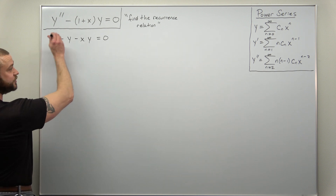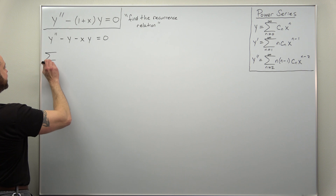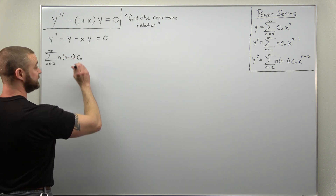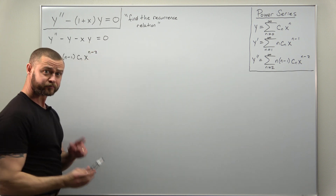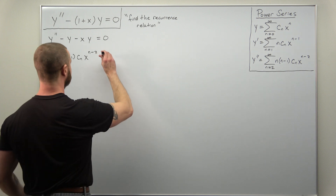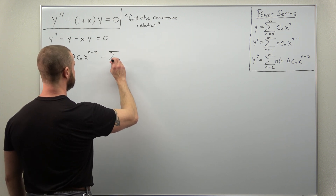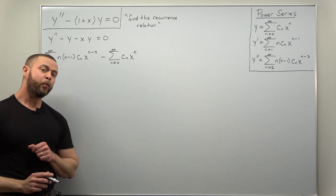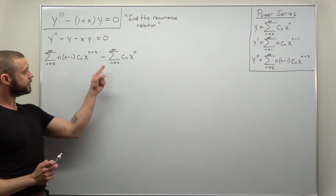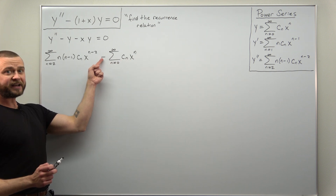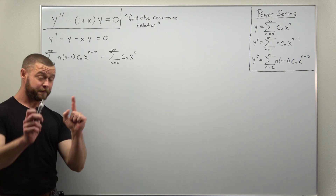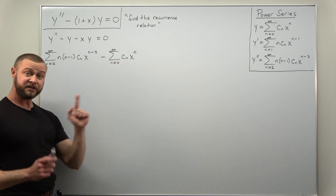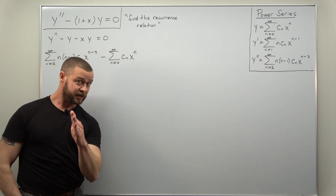Let's take our time. The power series for y double prime is the sum from n equals 2 to infinity of n times n minus 1 times c sub n times x to the n minus 2. Now we have minus the power series for y, which sums from n equals 0 to infinity of c sub n times x to the n. Keep in mind this is not a single term — this minus sign will distribute to all infinite terms in the summation. Put parentheses around that infinite series as a reminder.